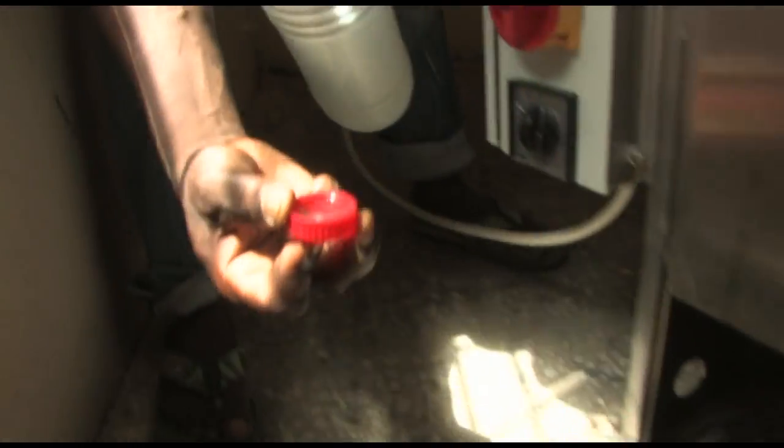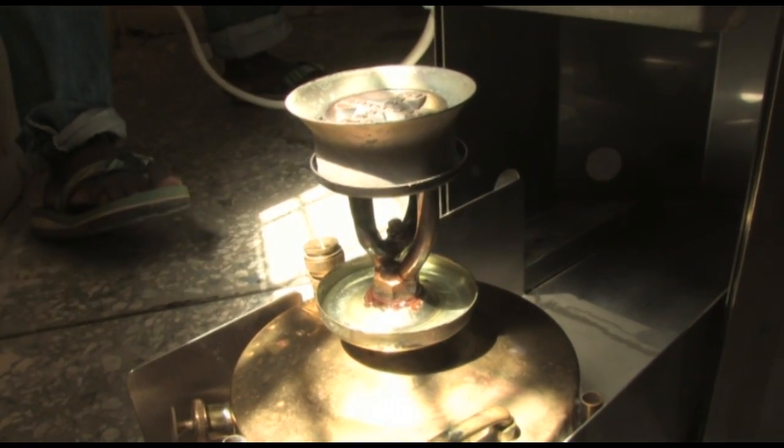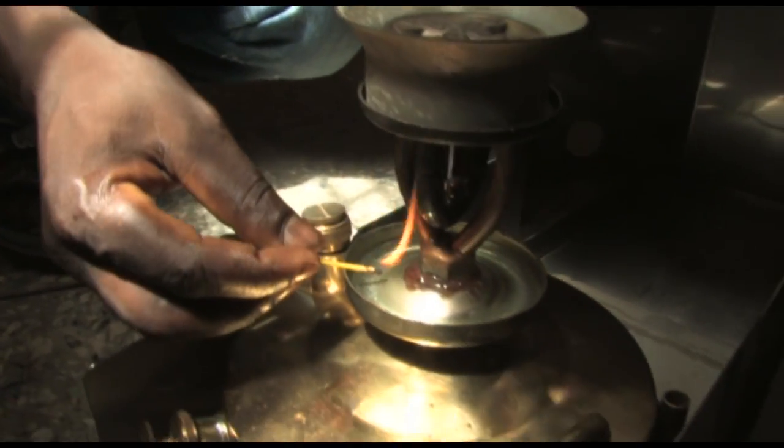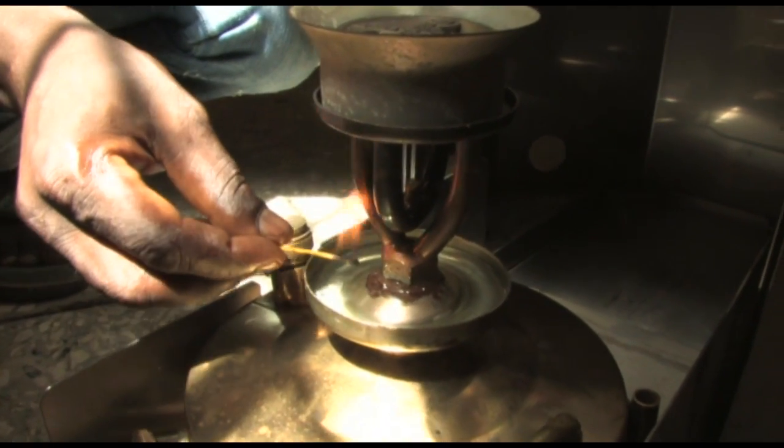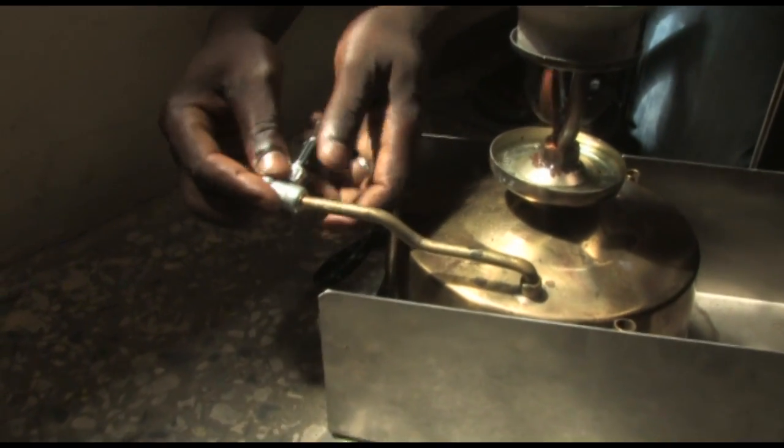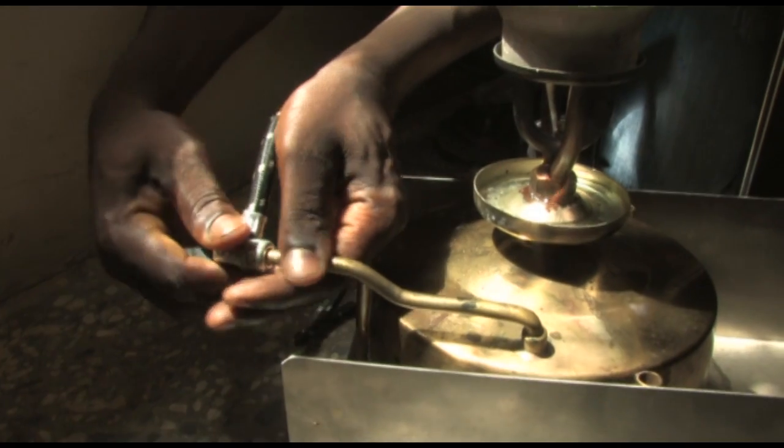Fill the preheater cup with methylated spirit or alcohol. Light the preheater. Now leave the burner alone. Do not fiddle with it. If you have not already done so, connect the tube of the foot pump to the air valve on the burner.